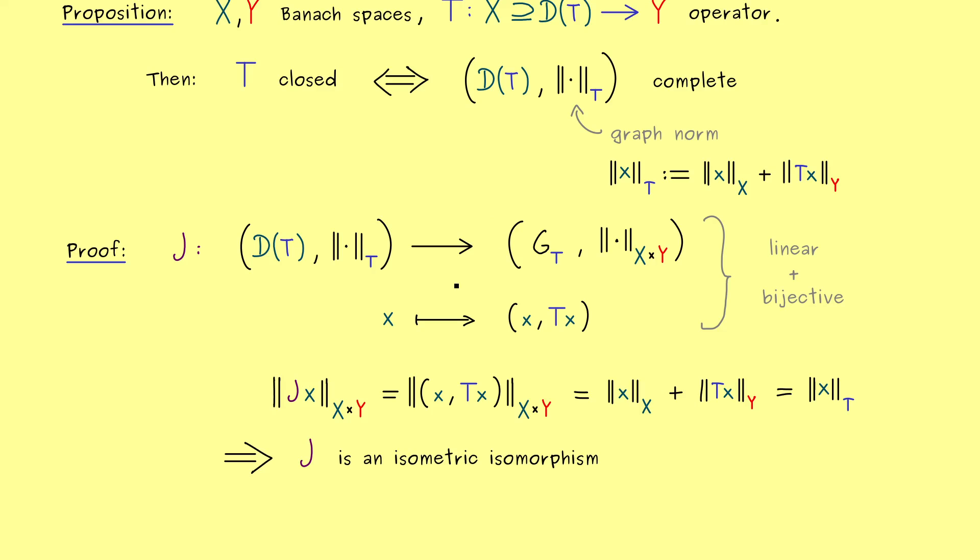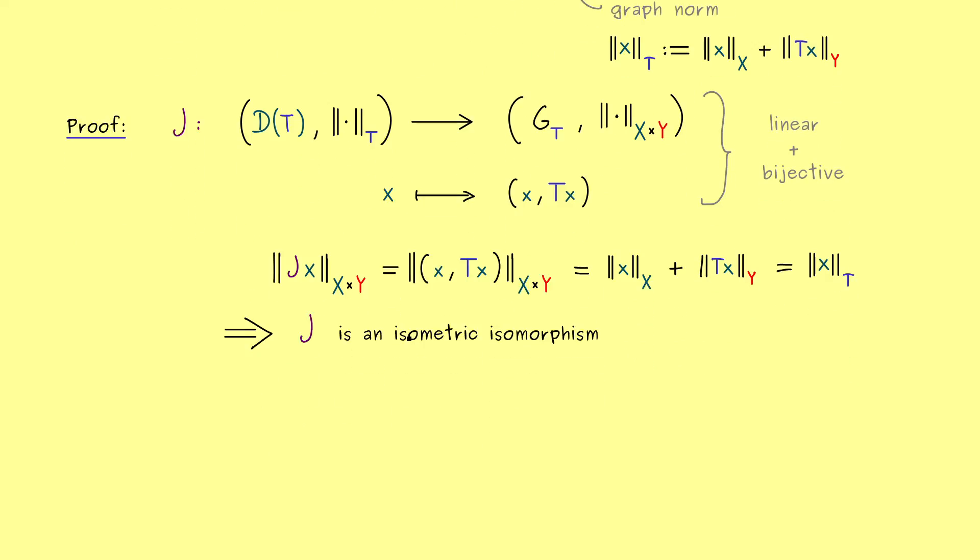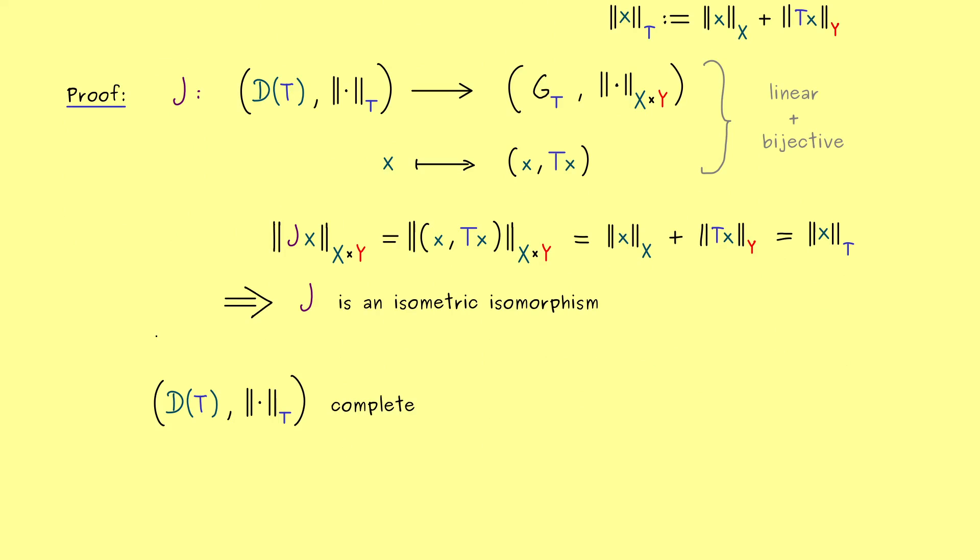They have exactly the same information and for example we have a one-to-one correspondence between Cauchy sequences. Therefore if the one space is complete the other one is also complete. Hence we can write D of T complete if and only if G_T complete.